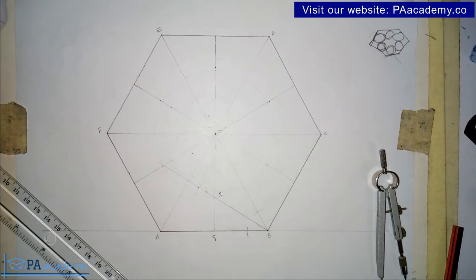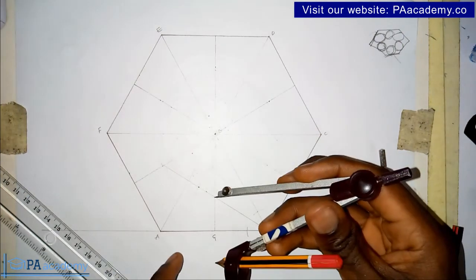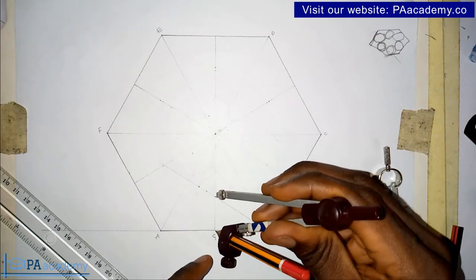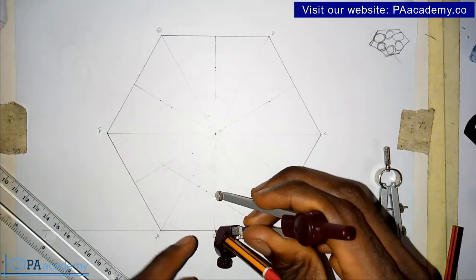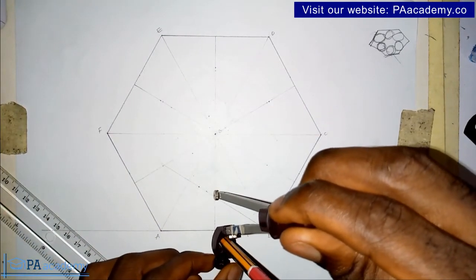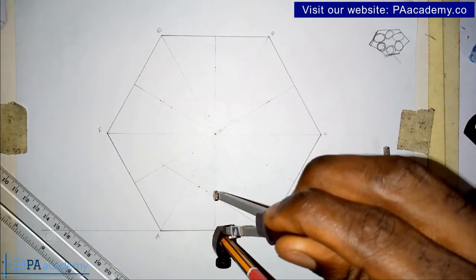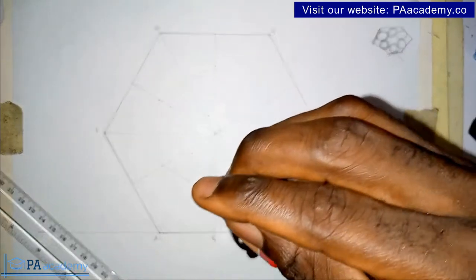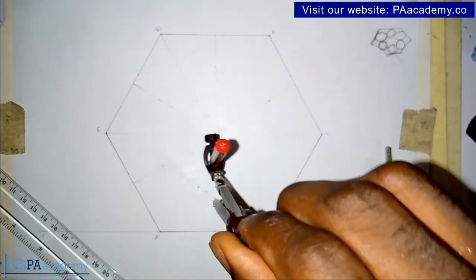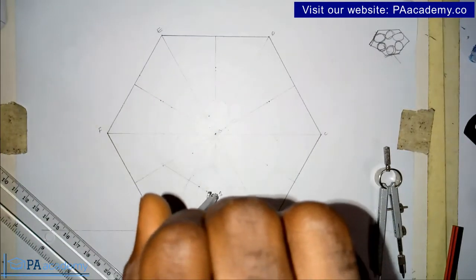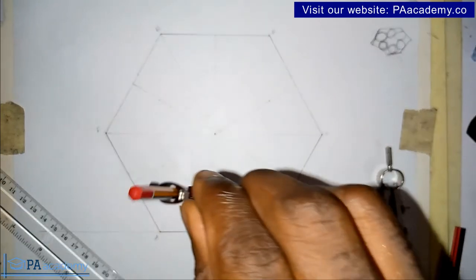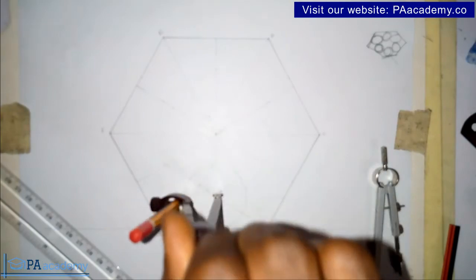Now to get the radius of the circle, the radius of the circle is simply from this point 1 from point 1 to point G. So you bring in your compass again and you place it there. So that means point 1 to G represents the radius of the circle. So having gotten that, you can now draw the circle.